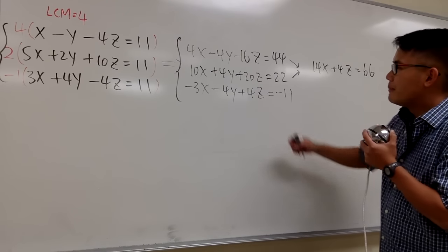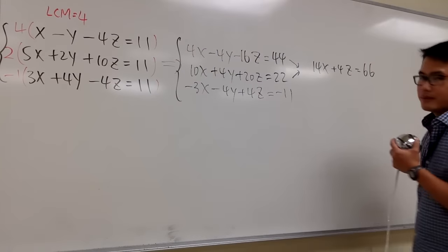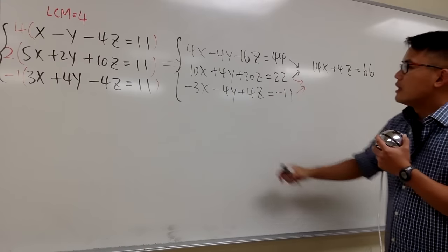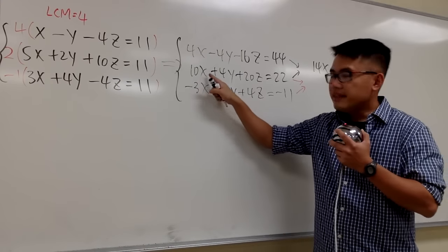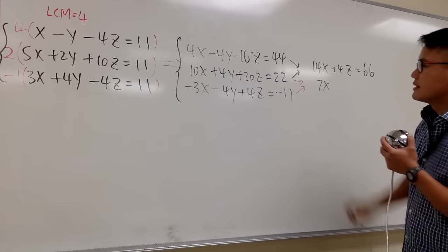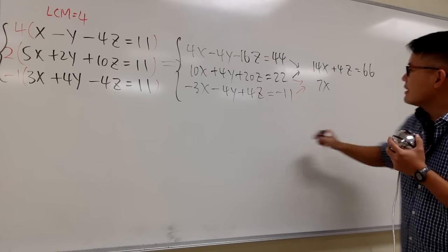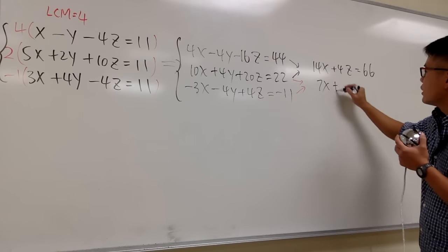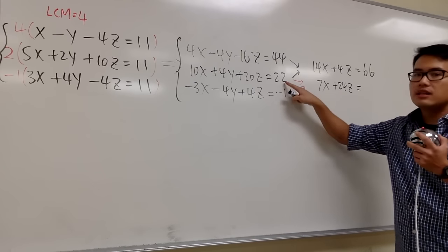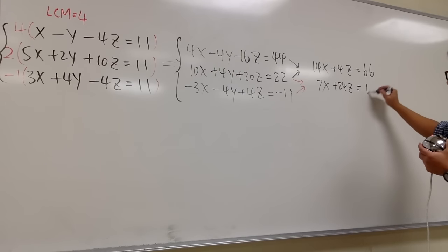Then I'm going to combine the second and the third equation. 10x minus 3x gives us 7x, the y terms cancel out, and 20z plus 4z is plus 24z, and 22 minus 11 gives us 11.